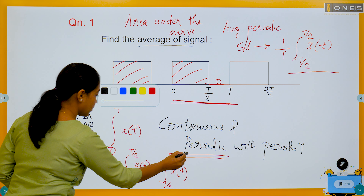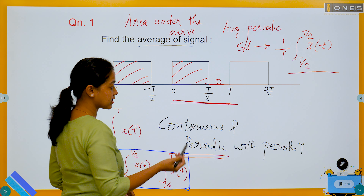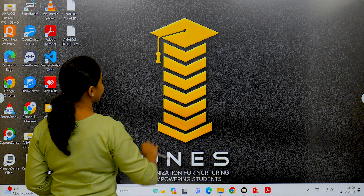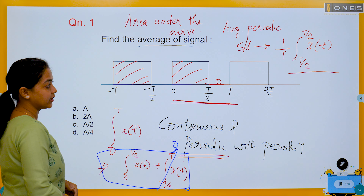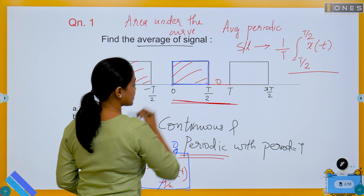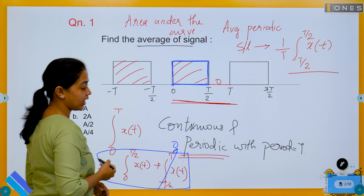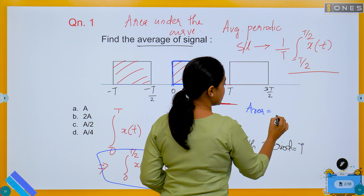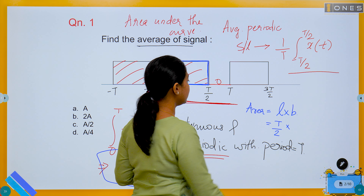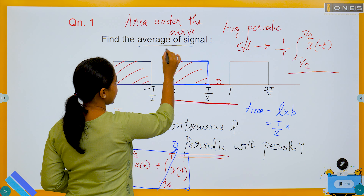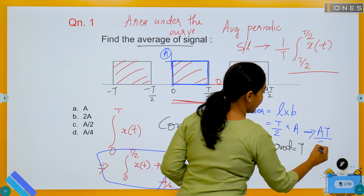The value equals the area of this rectangle from 0 to T/2. We calculate the area of this rectangle as length × breadth. The length is T/2 and the breadth (amplitude) is A, so the area under the curve is A×(T/2).